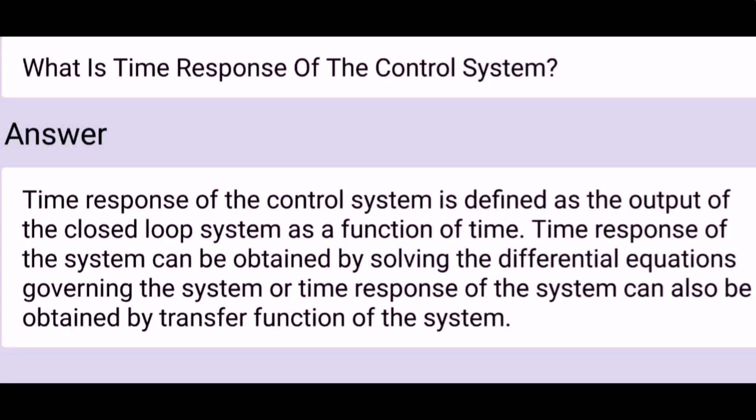What is the time response of the control system? Time response of the control system is defined as the output of the closed loop system as a function of time. Time response of the system can be obtained by solving the differential equations governing the system, or it can also be obtained by the transfer function of the system.